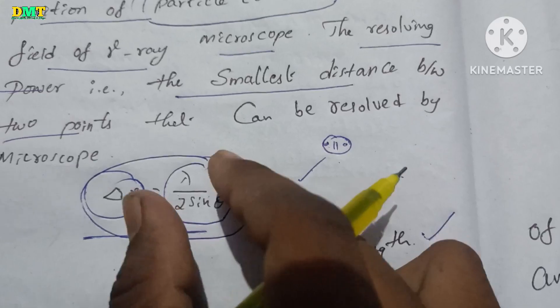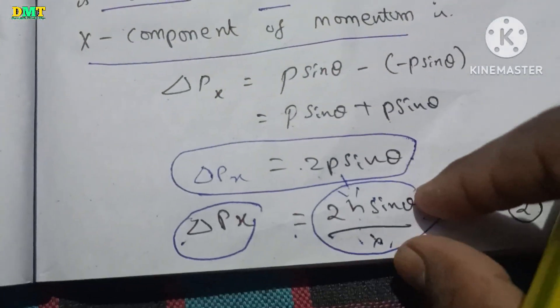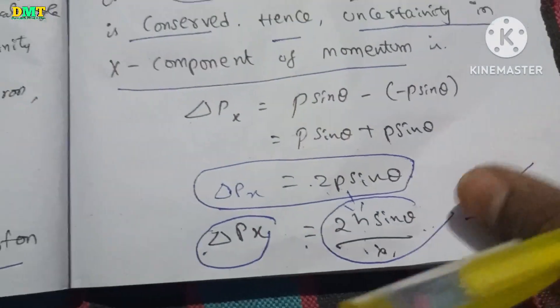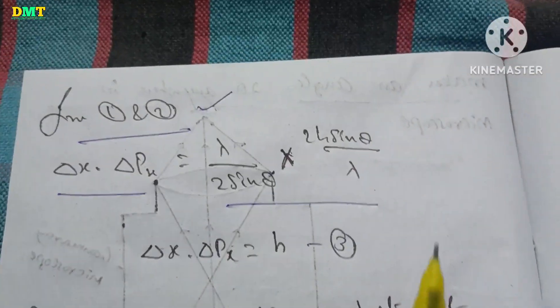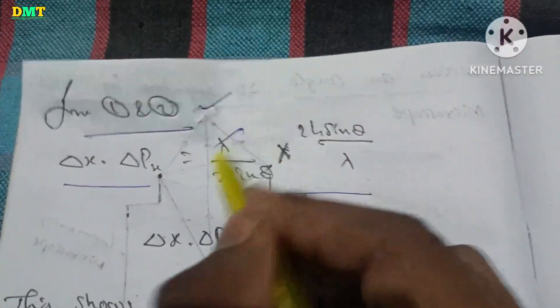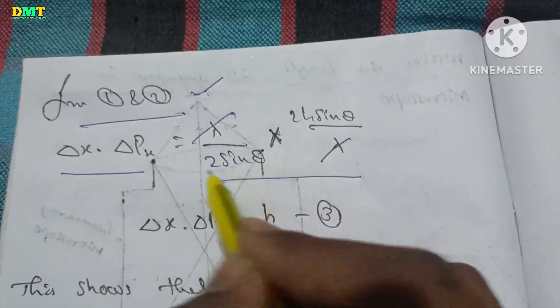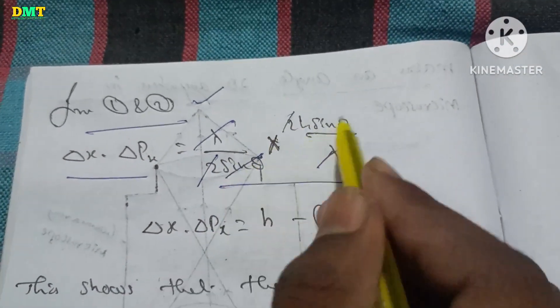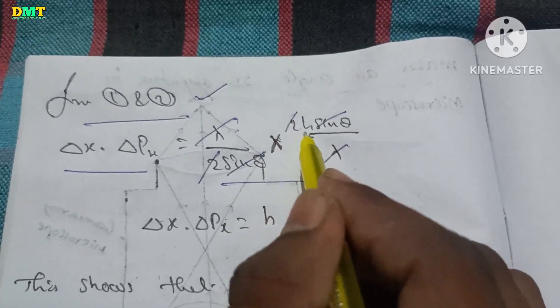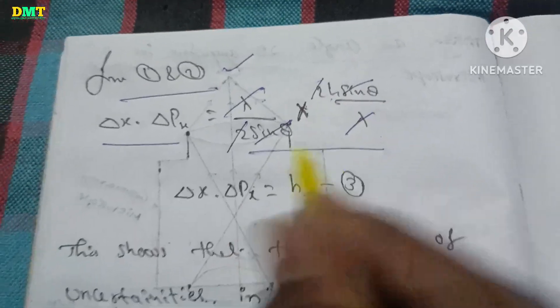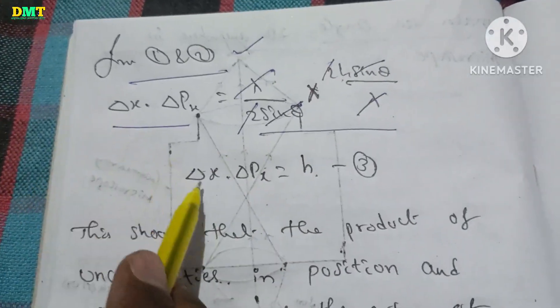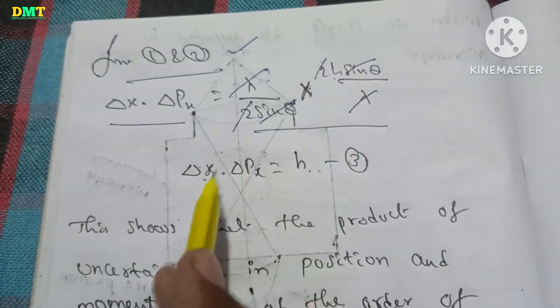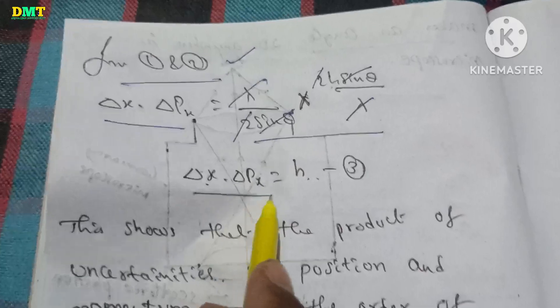Lambda by 2 sin theta multiplied by 2h sin theta by lambda. Lambda cancels lambda, 2 cancels 2, sin theta cancels sin theta. We are left with: delta x into delta Px is equal to h.